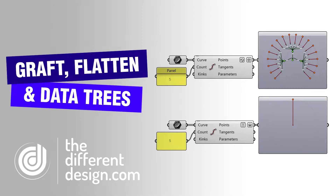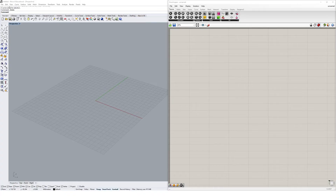Let's take a look at the graft, flatten, simplify, and reverse tools in Grasshopper and how they can be used on objects, lists, and data trees. Let's start by creating three simple lines in Rhino and referencing them into Grasshopper.